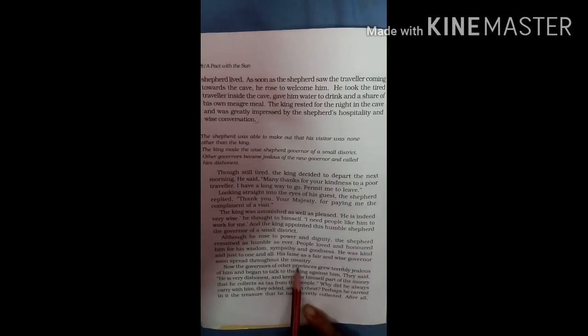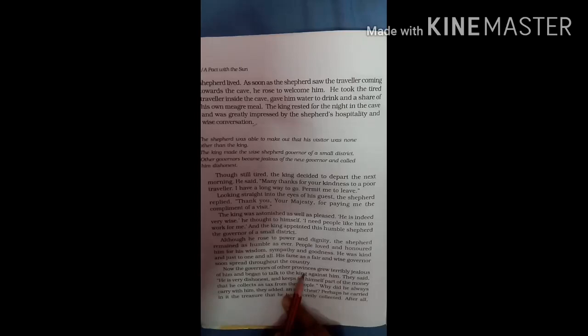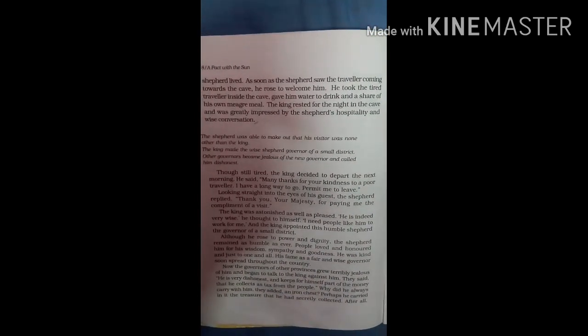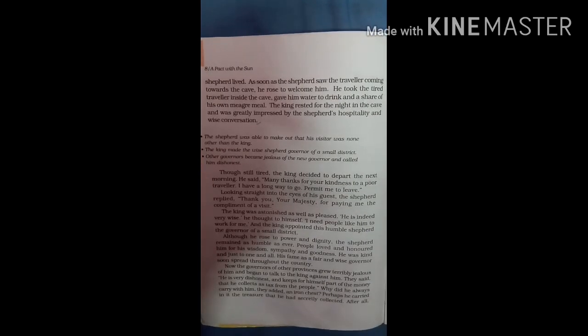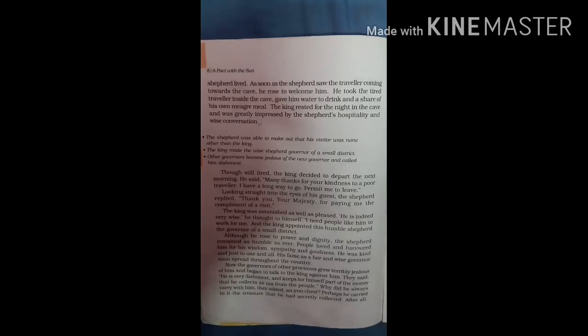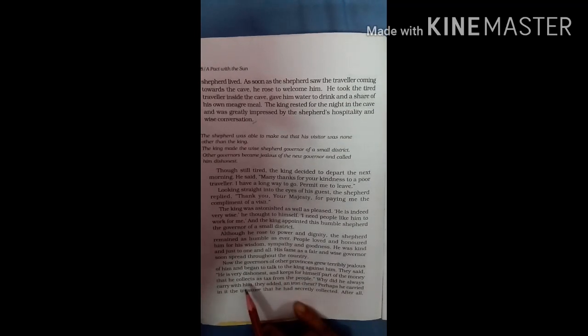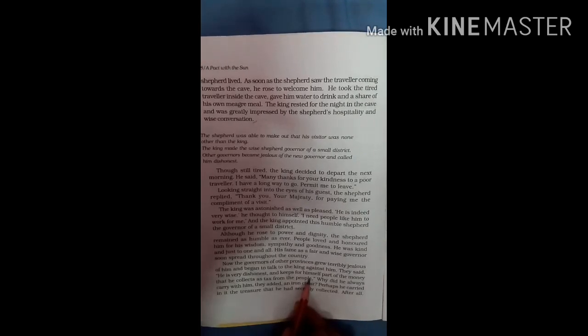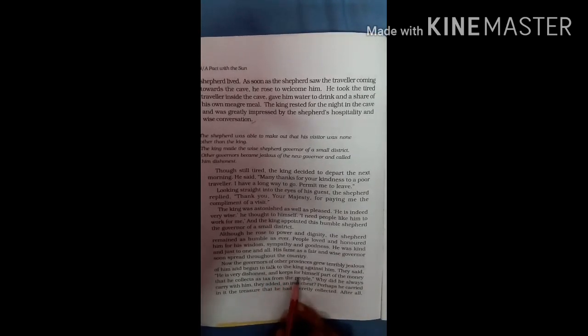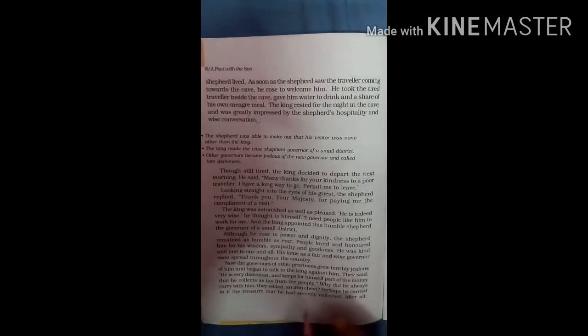Now the governors of the other provinces grew terribly jealous of him and began to talk to the king against him. When other governors heard about this wise shepherd, they became very jealous and went to the king to speak against him. They said he is very dishonest and keeps for himself a part of the money that he collects as tax from the people. They told the king that he is dishonest and keeps some of the tax money collected from people for himself.